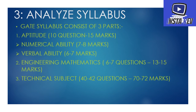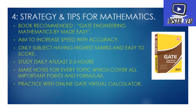For engineering mathematics, I will recommend the book Gate Engineering Mathematics by May Dizzi. A key feature of this book is that questions are arranged topic-wise and chapter-wise, and it contains questions from all branches, making it very useful for GATE aspirants. Always aim to increase speed with accuracy. Solve previous year GATE questions and measure your speed — check your accuracy and analyze yourself. This subject carries the highest marks at 15, and it is easy to score. Study daily for at least 2–3 hours and make notes covering all important points and formulas, which will help you during last-minute revision.